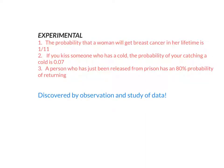Experimental is just the opposite. These are some examples of experimental: the probability that a woman will get breast cancer in a lifetime is one out of 11. You can't do math to figure that out, that's just something we've seen from data in the past. If you kiss someone who has a cold, the probability of catching a cold is 0.07. Again, that's just studying things that have happened before. A person just released from prison has an 80 percent chance of returning. Again, that's just based on records we have.